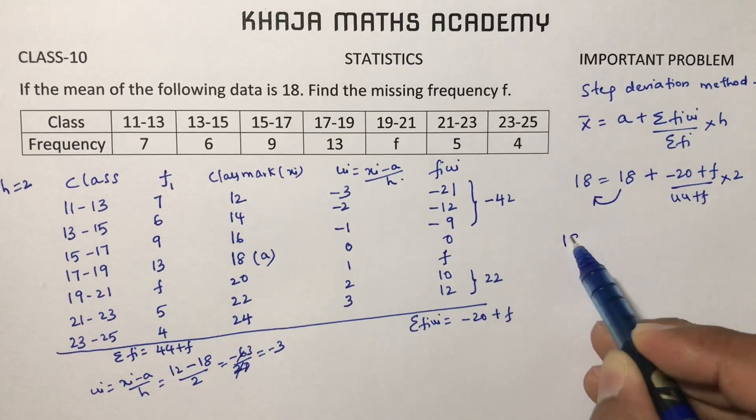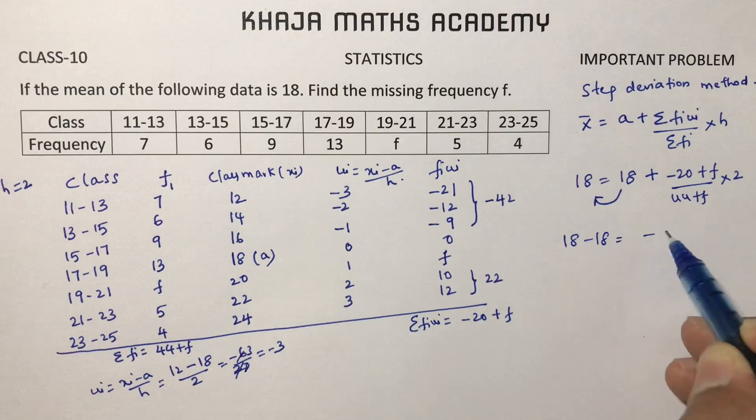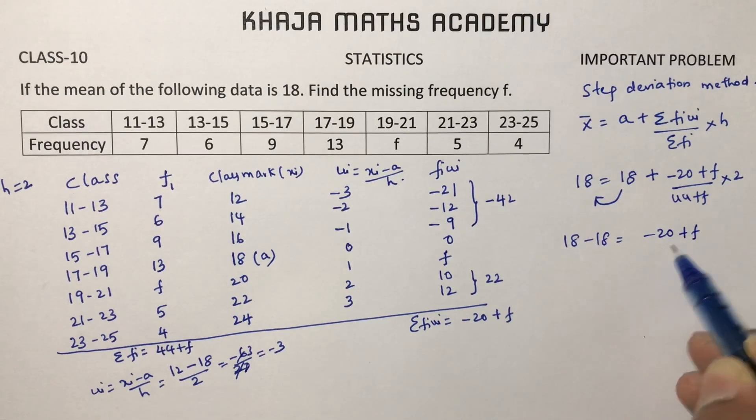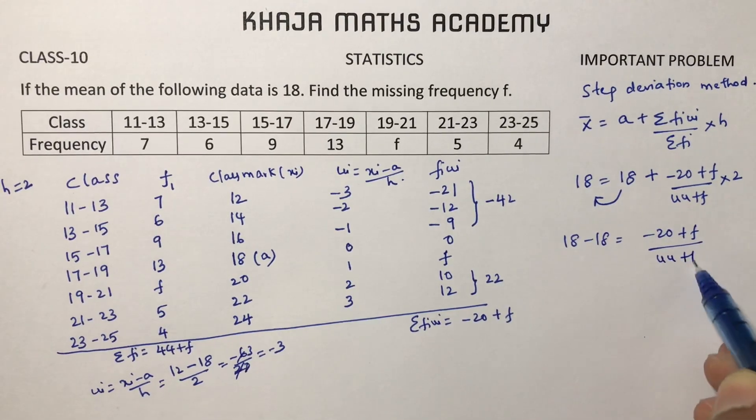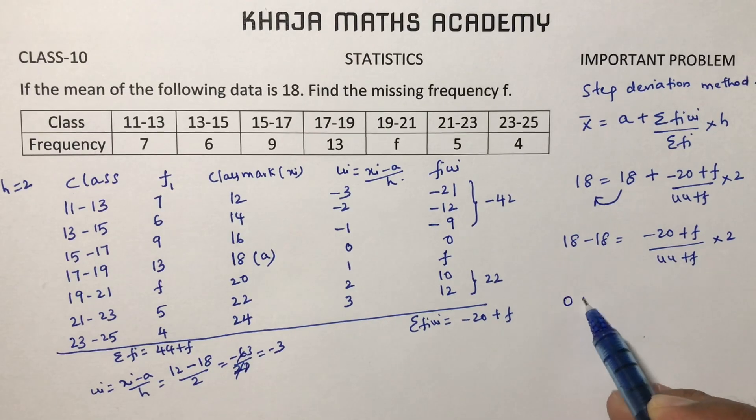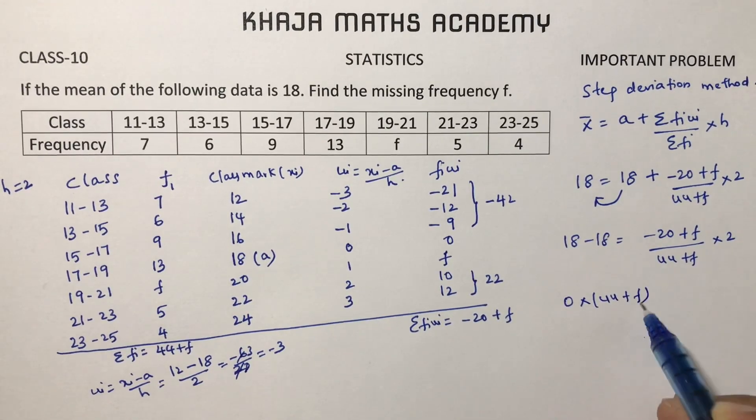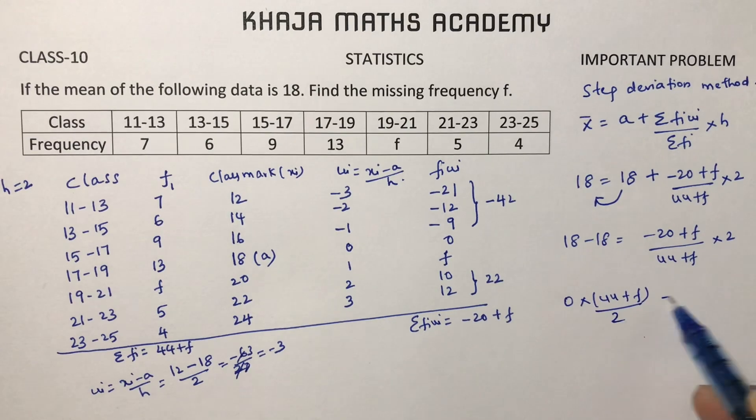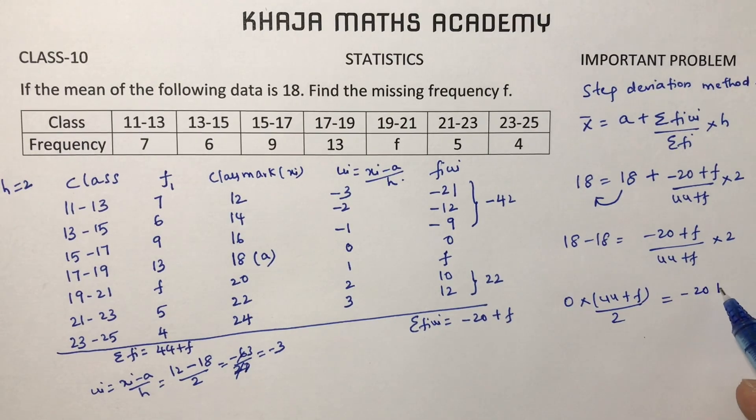18, if you will transpose, 18 minus 18 equals minus 20 plus F by 44 plus F into 2. 18 minus 18 is 0.